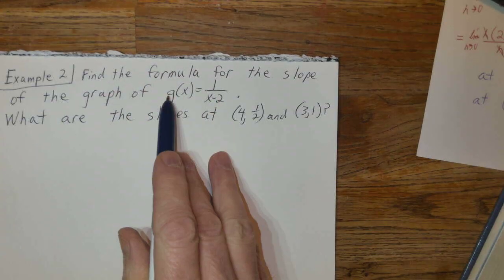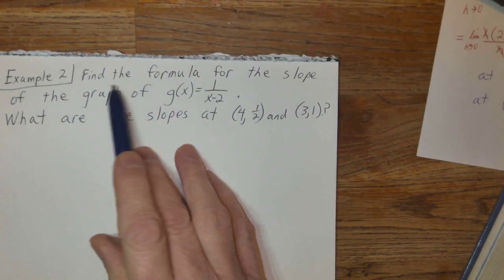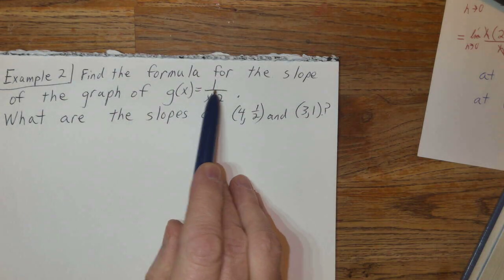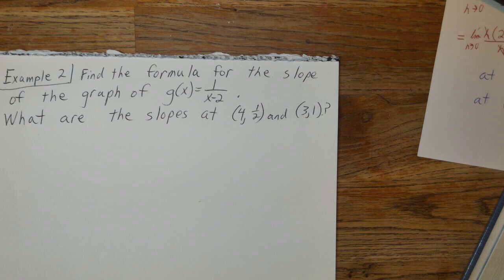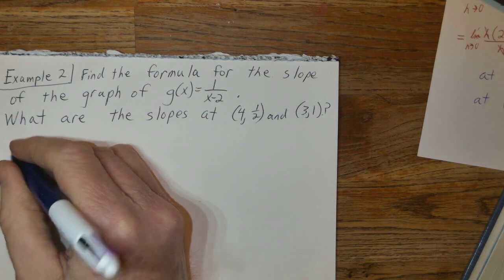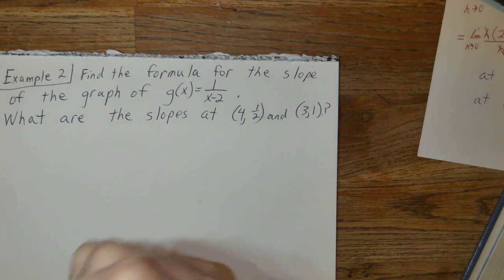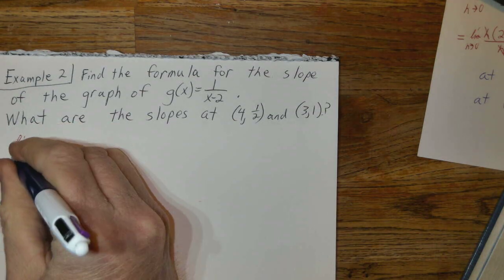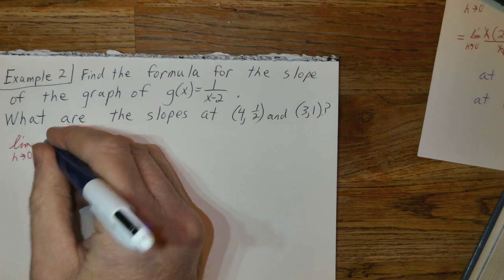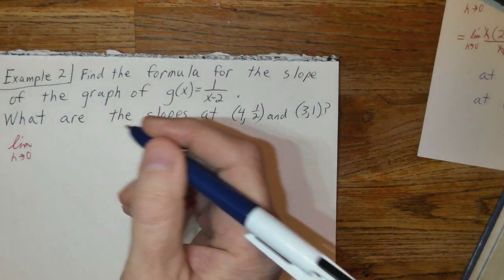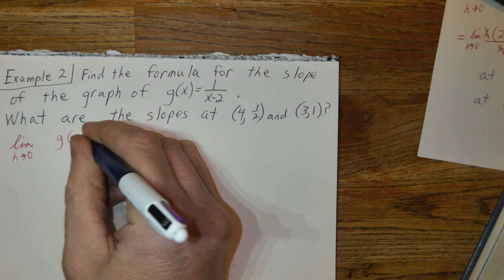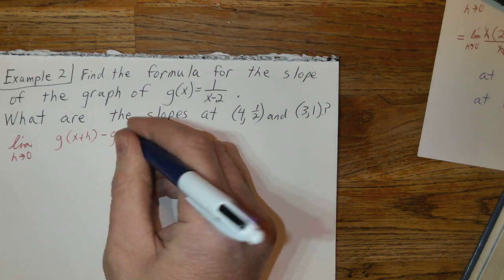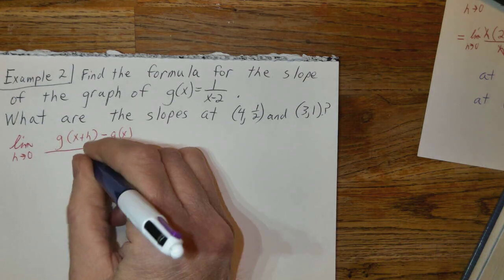I want to find the general formula for the slope of anything on this function, and then we have specific values for x that we're going to try it for. Remember, I'm just going to write this over to get ourselves focused. We need to find the limit of [g(x+h) - g(x)]/h.